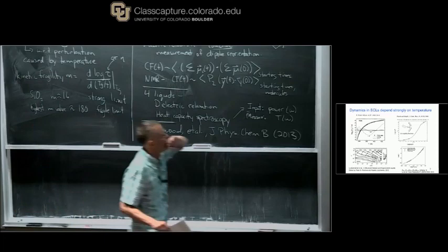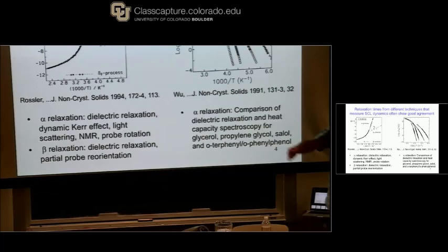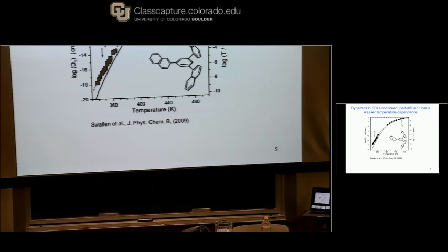Having just said that to a first approximation, no matter what you measure, it all slows down the same — now I'm going to tell you the most important exception: the translational diffusion coefficient.